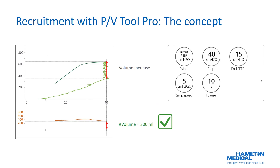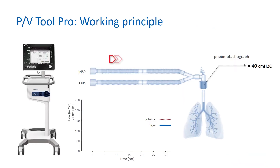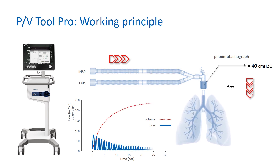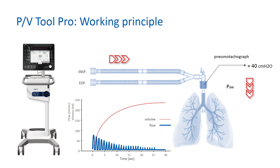With the PVTool Pro option, you have the ability to quantify the effectiveness of the recruitment maneuver by measuring the volume increase at end inspiration. During the recruitment portion, the ventilator maintains a constant pressure of 40 centimeters of water for 10 seconds. If some recruitment occurs, the total volume of aerated lung increases and, as a consequence, pressure at the proximal airway decreases. The ventilator then inflates using little spikes of flow to maintain airway pressure at 40 centimeters of water.